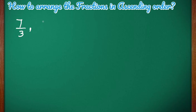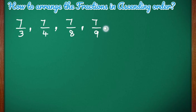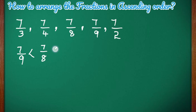Now let us go to the next type. Here in this group of fractions, the numerators are same. As you can see, all the numerators are 7, that means all the numerators are same. So how to write these fractions in ascending order? If the numerators are same, the fraction with the greatest denominator is the smallest fraction. So 7 by 9 is the smallest fraction because it has the greatest denominator.